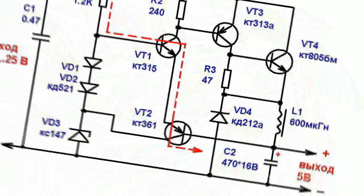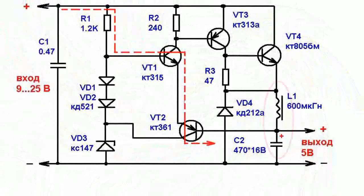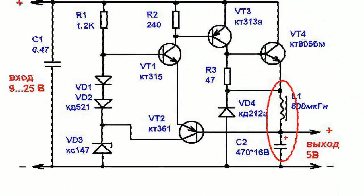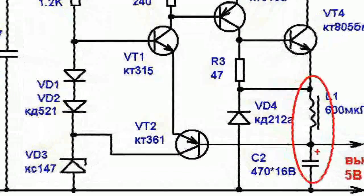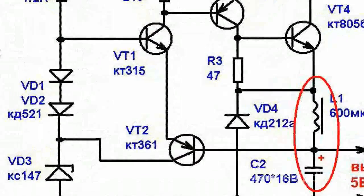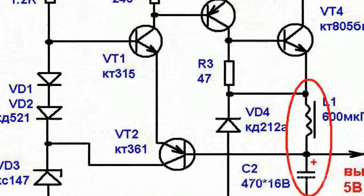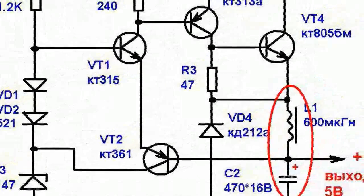The capacitor C2 starts to be charged by the current which flows through the choke L1. Once the capacitor's voltage exceeds the voltage of stabilization, the transistors VT1 and VT2 are closed.